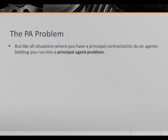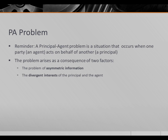But like all situations where you have a principal contracted to do an agent's bidding, you run into the Principal Agent Problem. A Principal Agent Problem is a situation that occurs when one party, an agent, acts on behalf of another — a principal. The problem arises mainly as a consequence of two factors: the problem of asymmetric information, which is that the agent typically has a lot more expertise and information about the costs and benefits of the good provided than the principal; and the divergent interests of the principal and the agent. Each has a life to live and each has plans and dreams and aspirations of their own, so they don't always have the same interest at hand. In particular, the agent would like to extract more money from the principal, and the principal would like to spend less money on the agent.